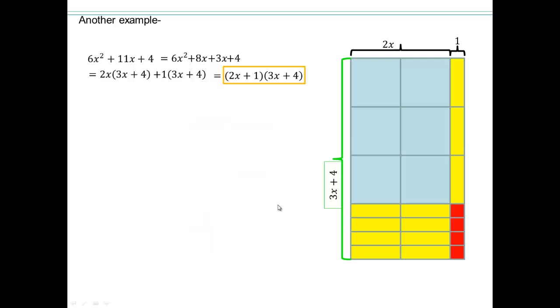But if you want to do it without algebra tiles, then let's see how we should do it. 6x² + 11x + 4. So take the 6x² times 4. Multiply that together. That gives us 24x². Think of two numbers that multiply to give you 24x² and add up to give you 11x. So clearly they're all going to have x's in them.